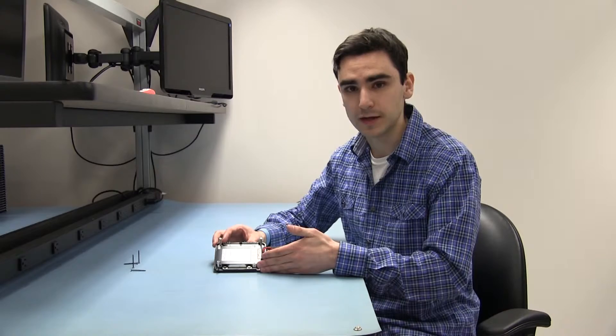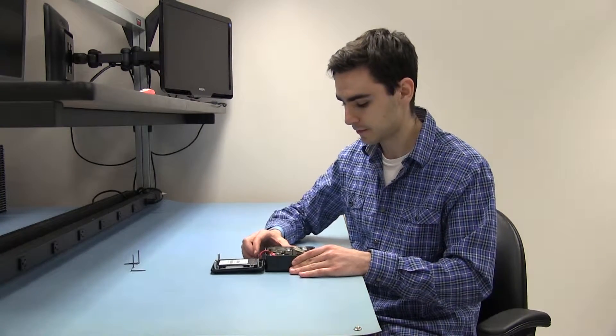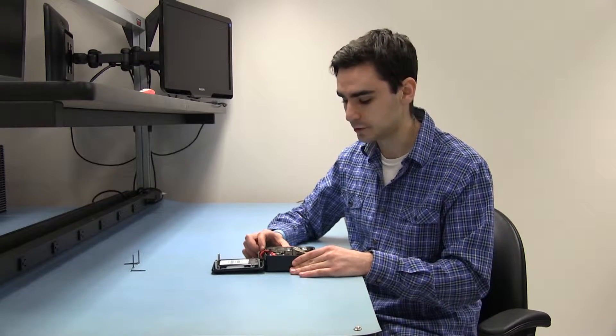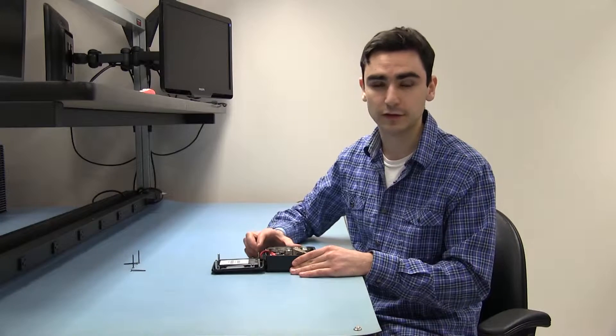So the first thing you'll probably notice is we have a 32 gigabyte SSD installed. That's through the SATA port. Aside from that though, you can also use this mSATA slot right here for storage. In front of that there's a little M2 slot.